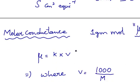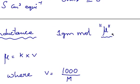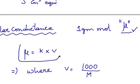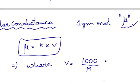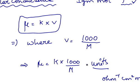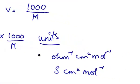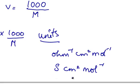Now that we know about equivalent conductance, it will be easier to learn about molar conductance. Molar conductance can be defined as the conductance of an electrolyte solution containing 1 gram mole of electrolyte. It is represented by the symbol mu. The relation between specific conductance and molar conductance is given by mu is equal to K into V, where V is equal to 1000 by M, which is the molarity of the solution. So mu can be rewritten as mu is equal to K into 1000 by M. The units of molar conductance are Ohm inverse centimeter square mole inverse, or Siemen centimeter square into mole inverse.